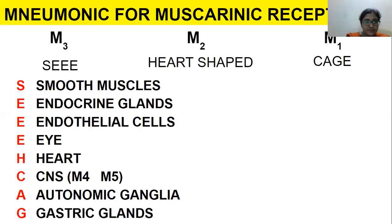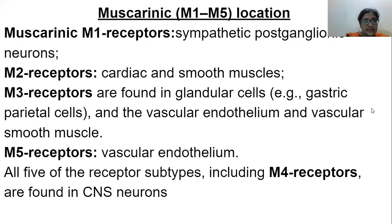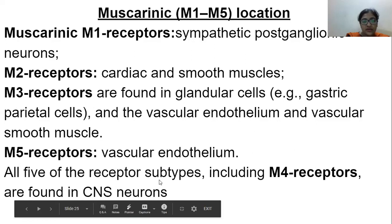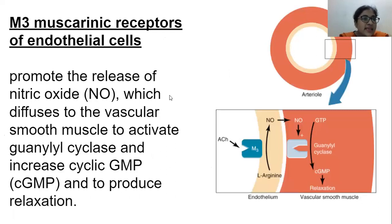Regarding receptor locations: M1 receptors are predominantly on sympathetic post-ganglionic neurons. M2 receptors are on cardiac and smooth muscle. M3 receptors are on glandular cells such as gastric parietal cells, as well as vascular endothelium and vascular smooth muscle. All five receptor types, including M4, are also found in CNS neurons. This concludes today's lecture on muscarinic receptor signaling.